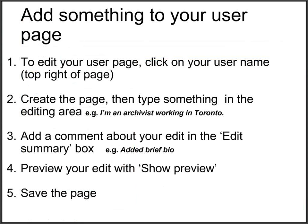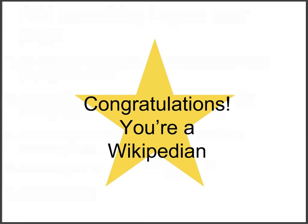A good page to begin editing with is your user page. Once you've logged in, your username will appear in red text at the top right of Wikipedia — it's red because the page doesn't exist yet. Click on it and choose the option to start the user page, or use one of the Create tabs at the top of the page. Type something in the editing area, for example 'I'm an archivist working in Toronto.' Scroll down and fill in the Edit Summary box, then preview the page by hitting Show Preview. If you're happy with it, hit Save Page — and that's it, you've just become a Wikipedian!